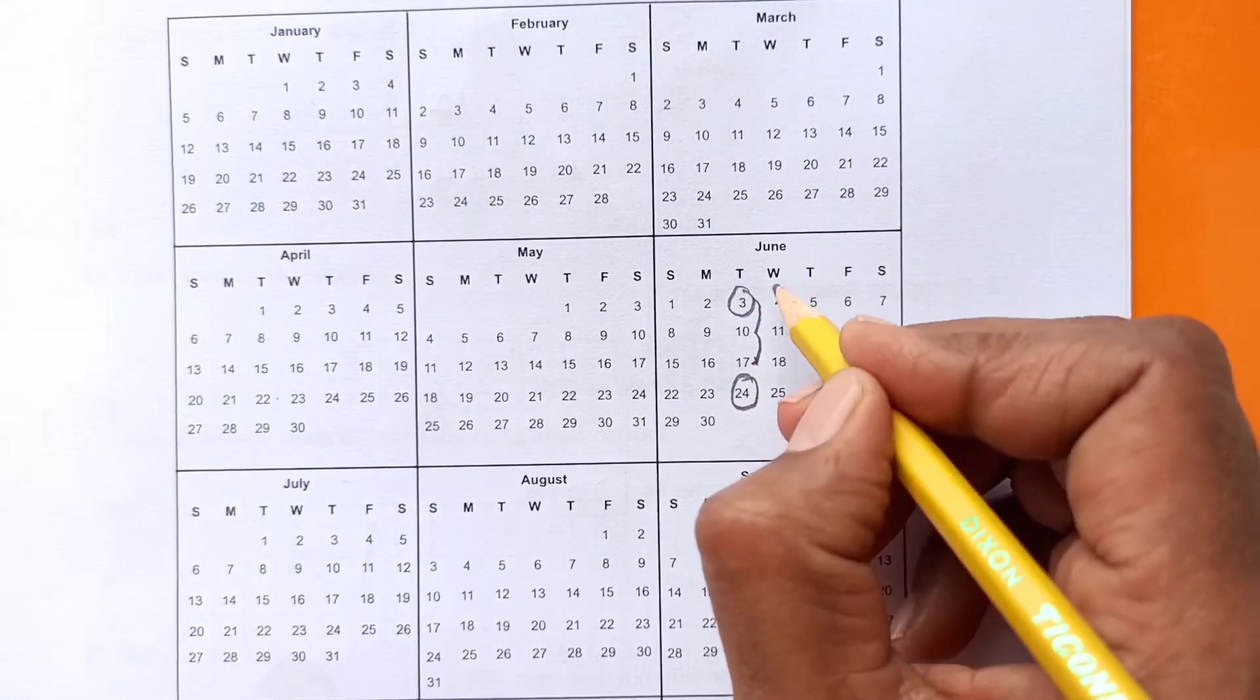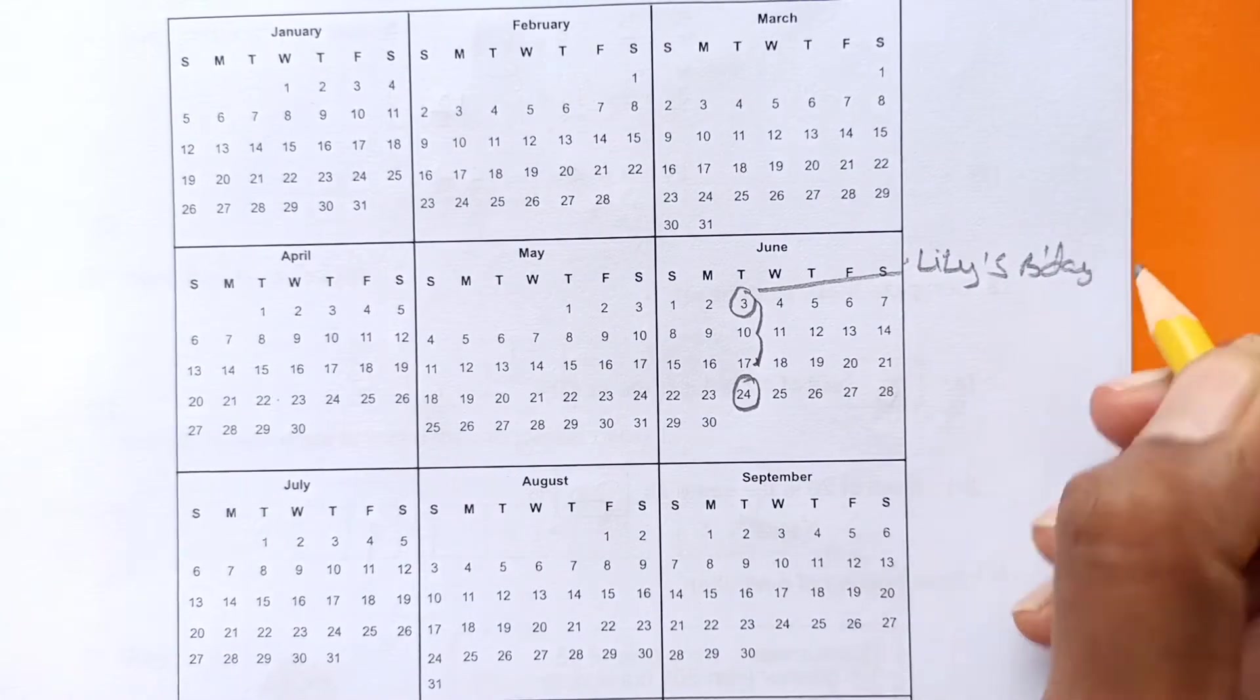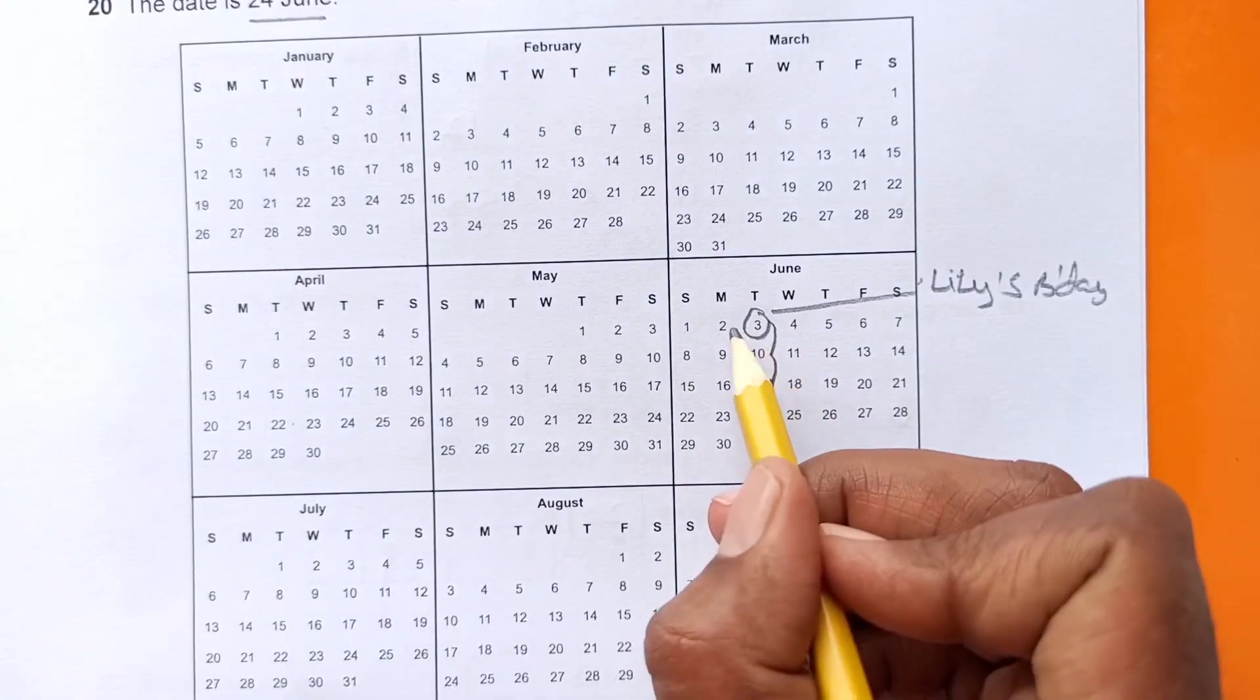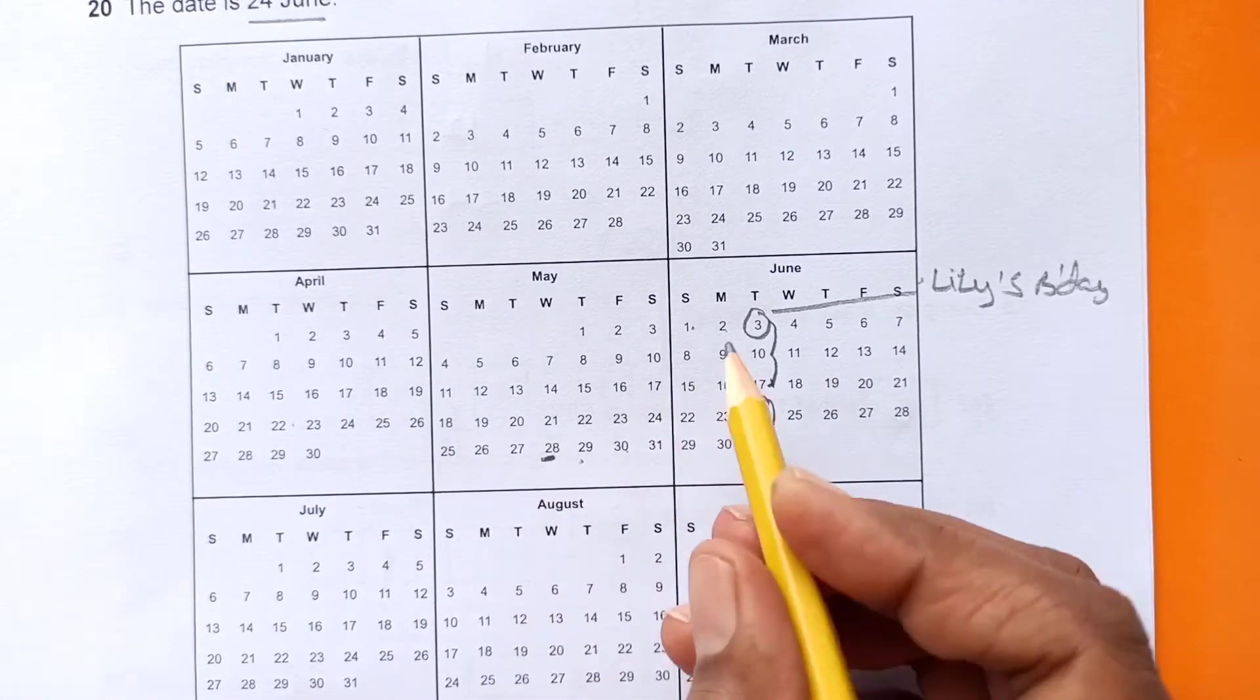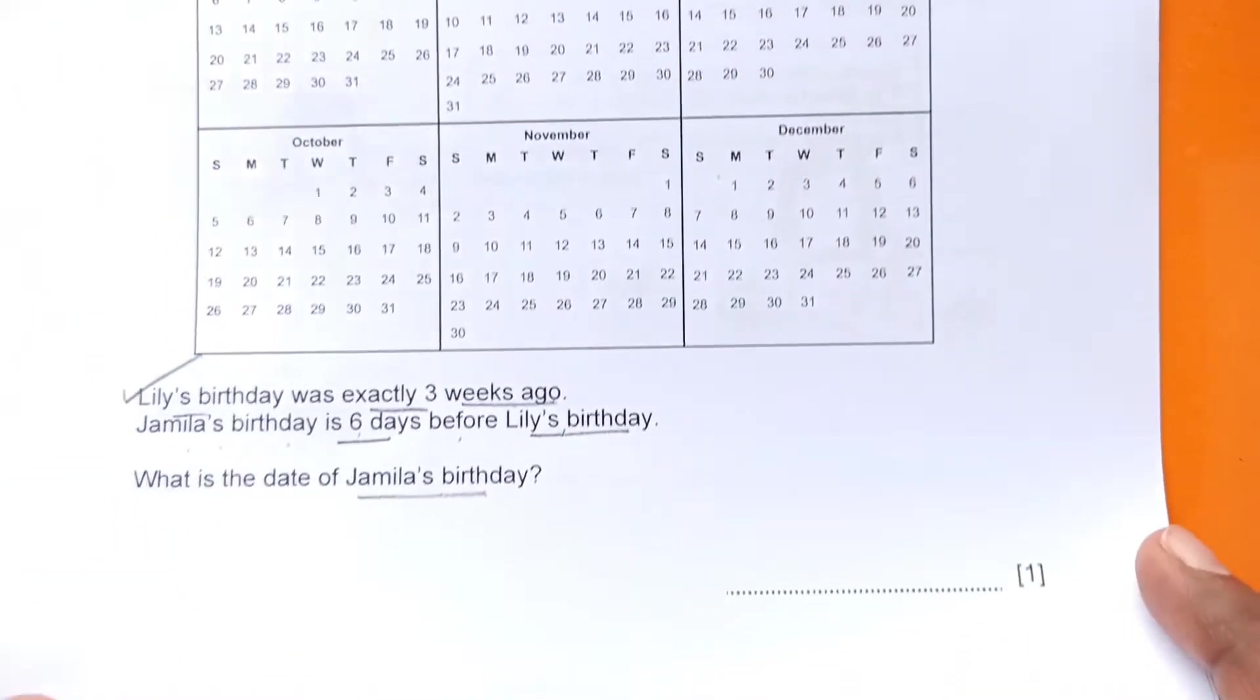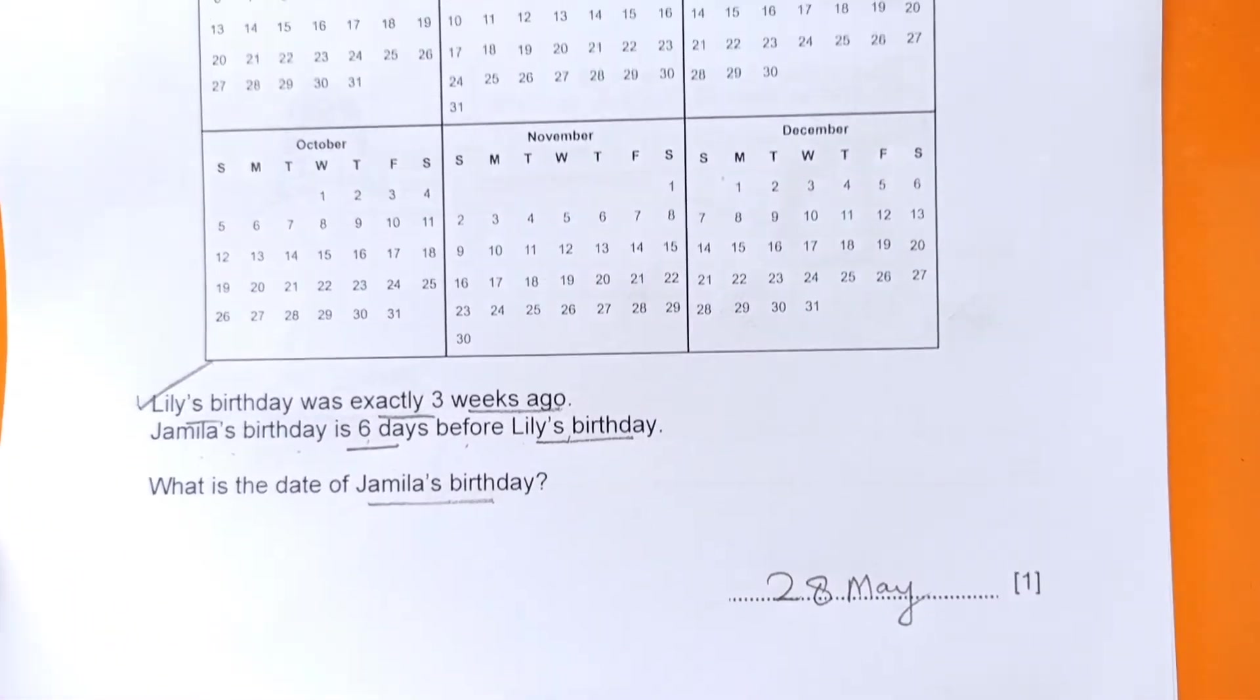Lily's birthday was three weeks ago, so from this date her birthday was three weeks ago - one week, two, and three. This was Lily's birthday. Now Jamila's birthday is six days before Lily's birthday, so six days before: one, two, three, four, five, and six. We need to enter May here, so her birthday is on 28th of May.